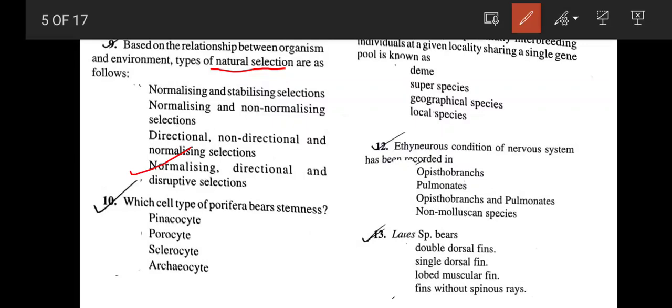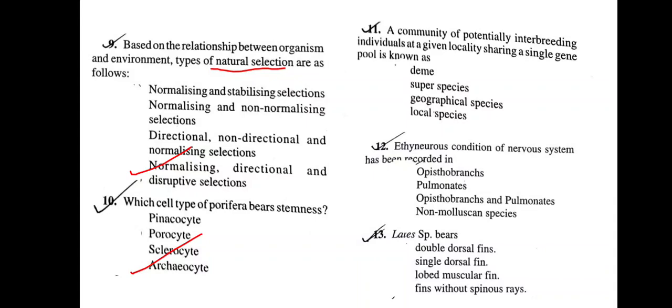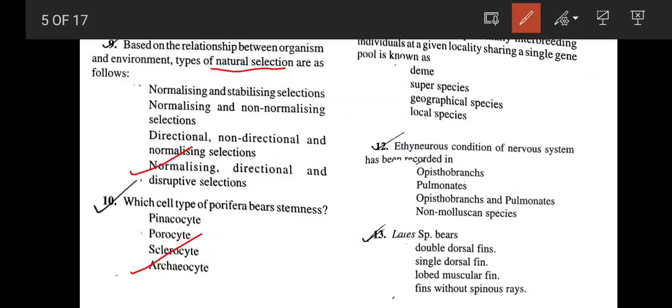Which cell type of Porifera bears stemness? It will be archaeocyte, because archaeocyte has totipotency from which sperm and ova can be formed. Next, a community of potentially interbreeding individuals at a given locality sharing the same gene pool is known as a deme. If you search deme in Wikipedia, you will find the exact sentence there. So the correct answer is deme.